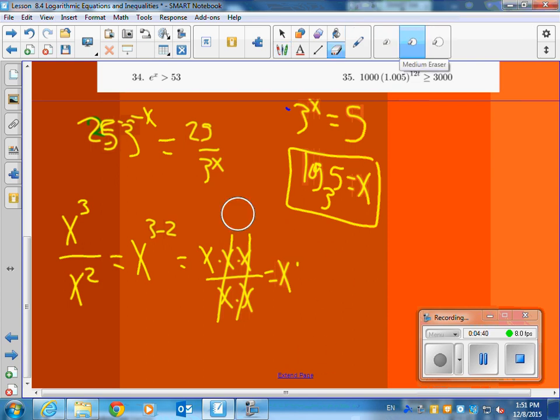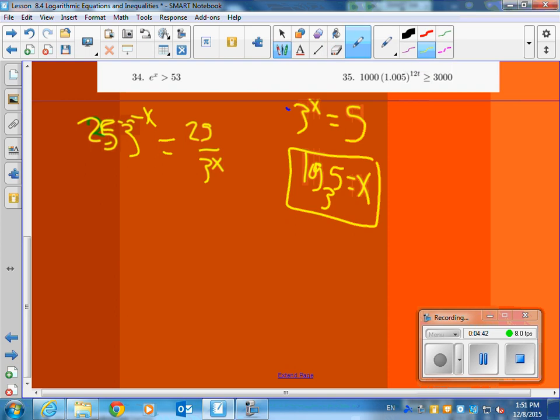Another thing that could come up is, let's say I had x squared over x cubed. Now that is x to the 2 minus 3, which is x to the what? 2 minus 3? Negative 1.